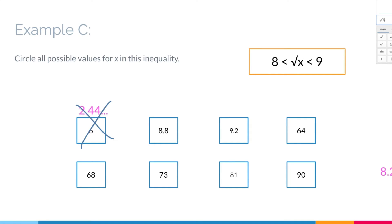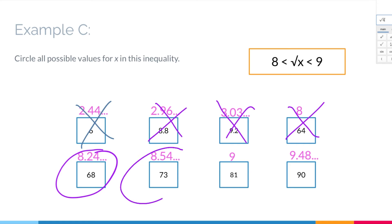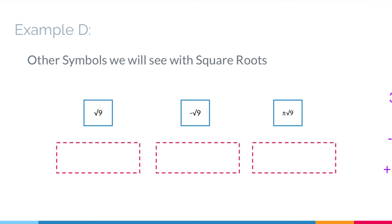Putting all the other choices into the calculator: 2.96, 3.3, and 3.03 are not between 8 and 9. Is 8 between 8 and 9? No — 8 is exactly 8. 8.24 is between 8 and 9, so that one counts. 8.54 is between 8 and 9, so that one counts too. Is 9 between 8 and 9? No — it's exactly 9. And the last number is greater than 9, so it doesn't work either.